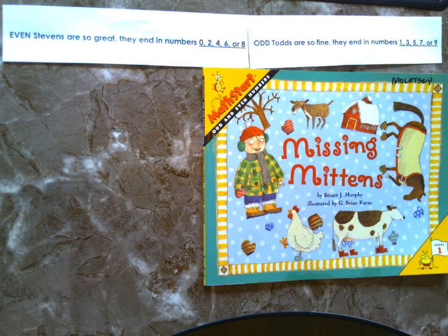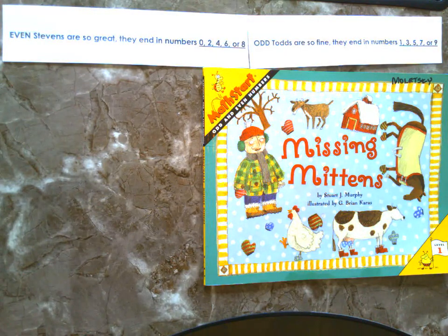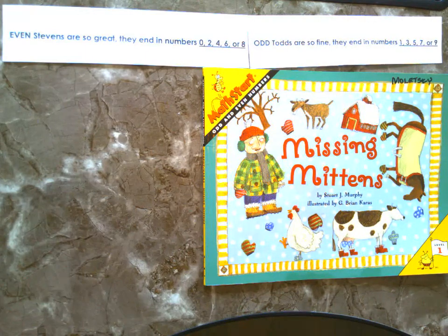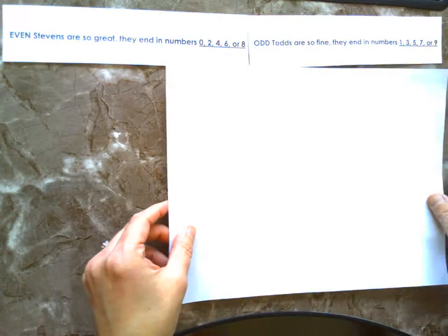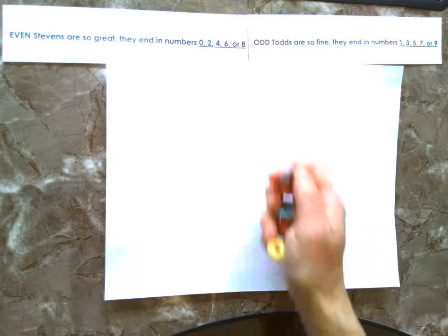Hello boys and girls, it's Mrs. Gorski back, and today we're going to be reading the story called Missing Mittens by Stuart J. Murphy, illustrated by G. Brian Karras. This story talks about how to simply determine if a number is odd versus even. We're going to do that in two ways — using some manipulatives, and then using two simple rhymes. But first, before we start reading, we're going to use some manipulatives here to help us out.